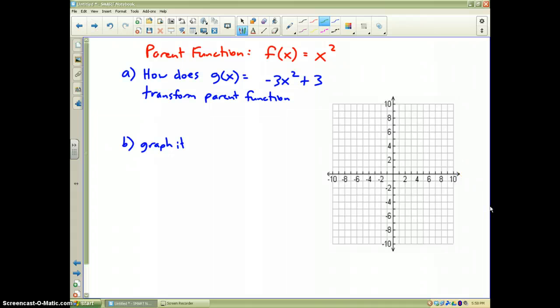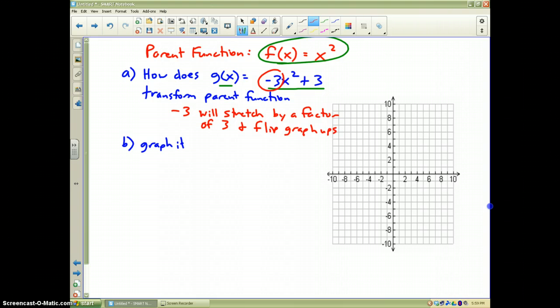Your turn. Pause the video, and I want you to answer the two questions. How does g of x equal to negative 3x squared plus 3 transform our parent function? And then letter b, graph it. All right, transformation. First of all, that negative 3 will stretch by a factor of 3 and flip the graph upside down.